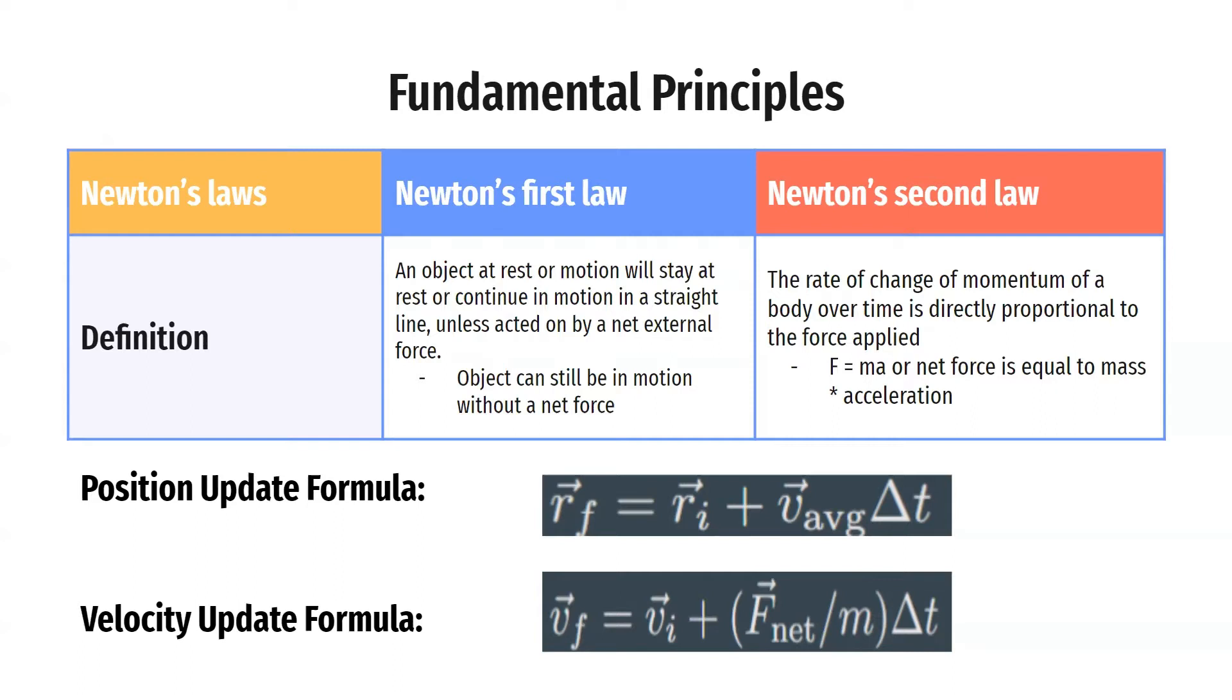And from Newton's second law, we're going to actually derive two formulas, as you can see here, the position update formula and velocity update formula. Both these formulas basically allow us to look in the future and predict the position and velocity of the rolling object as time goes on.